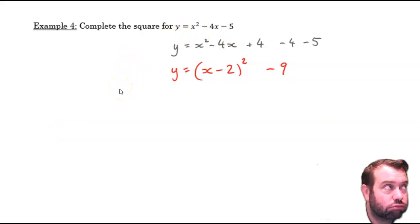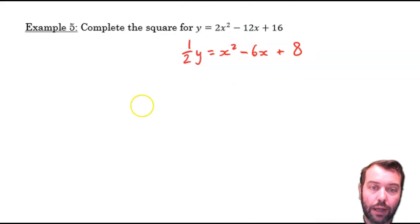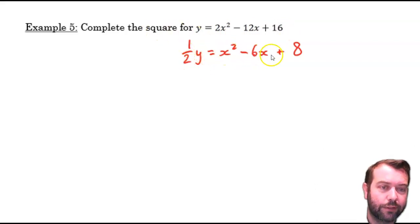Non-monic quadratics, a little bit tricky. The way we get around them being a little bit tricky is we treat them as monics. By dividing everything by the coefficient of the x-squared term. So, instead of saying y equals 2x-squared minus 12x plus 16, I halve both sides and I get half of y is x-squared minus 6x plus 8.